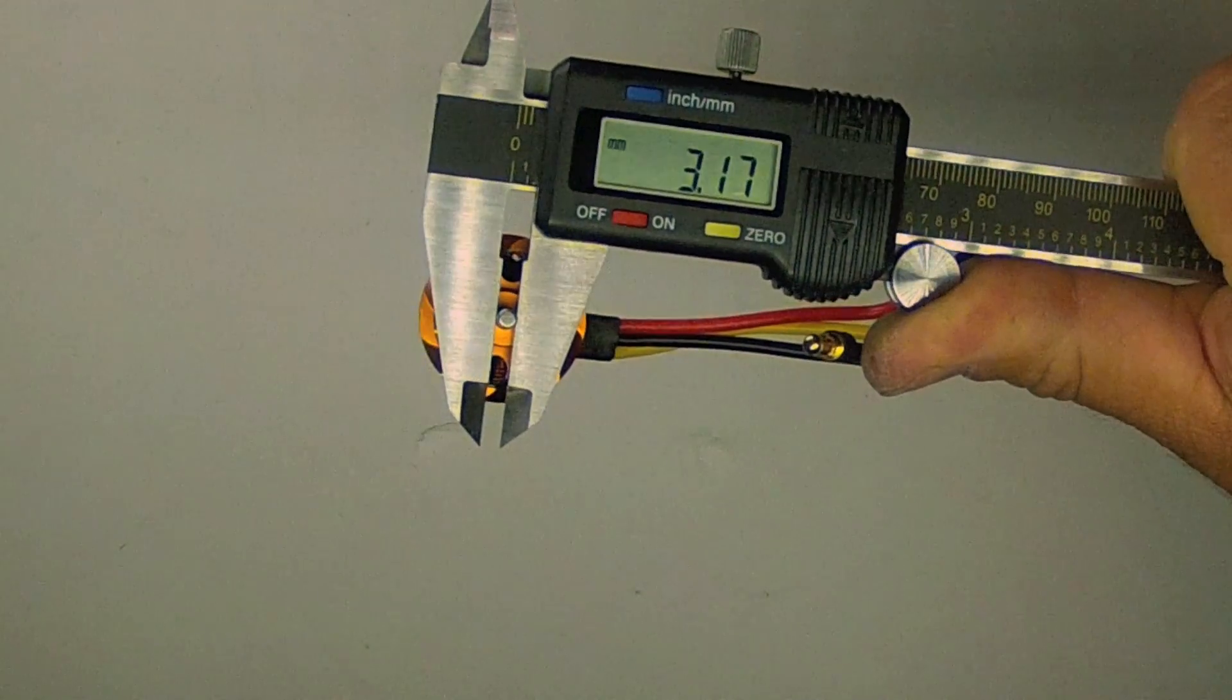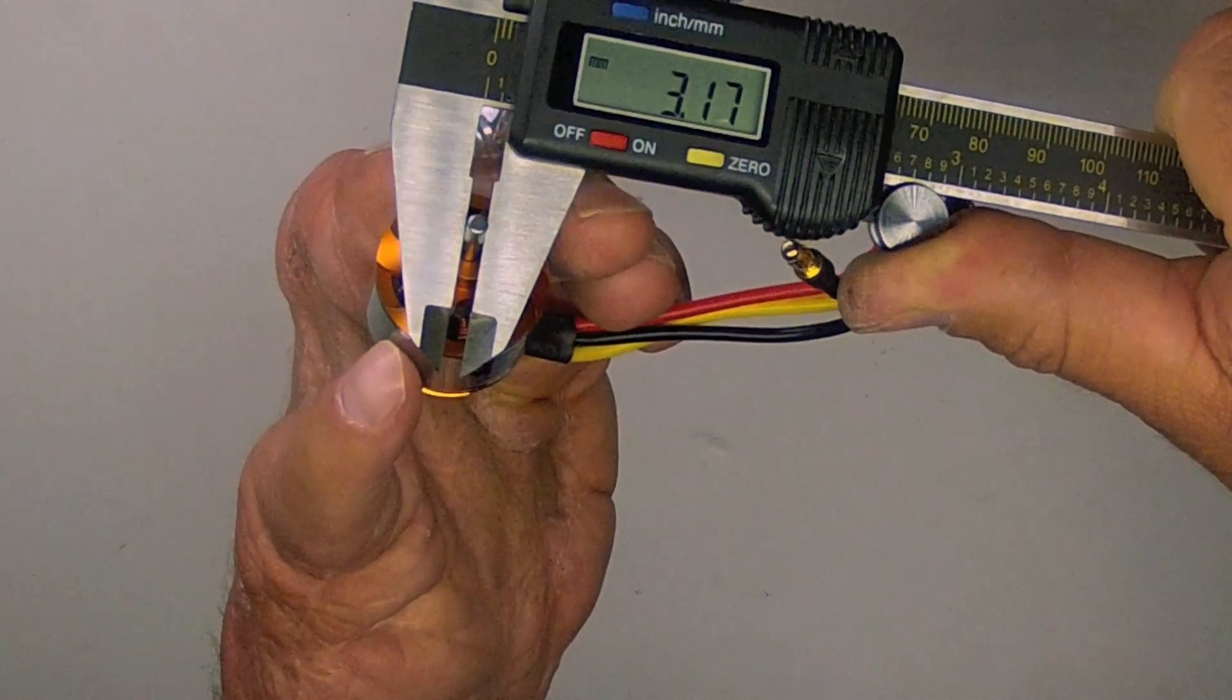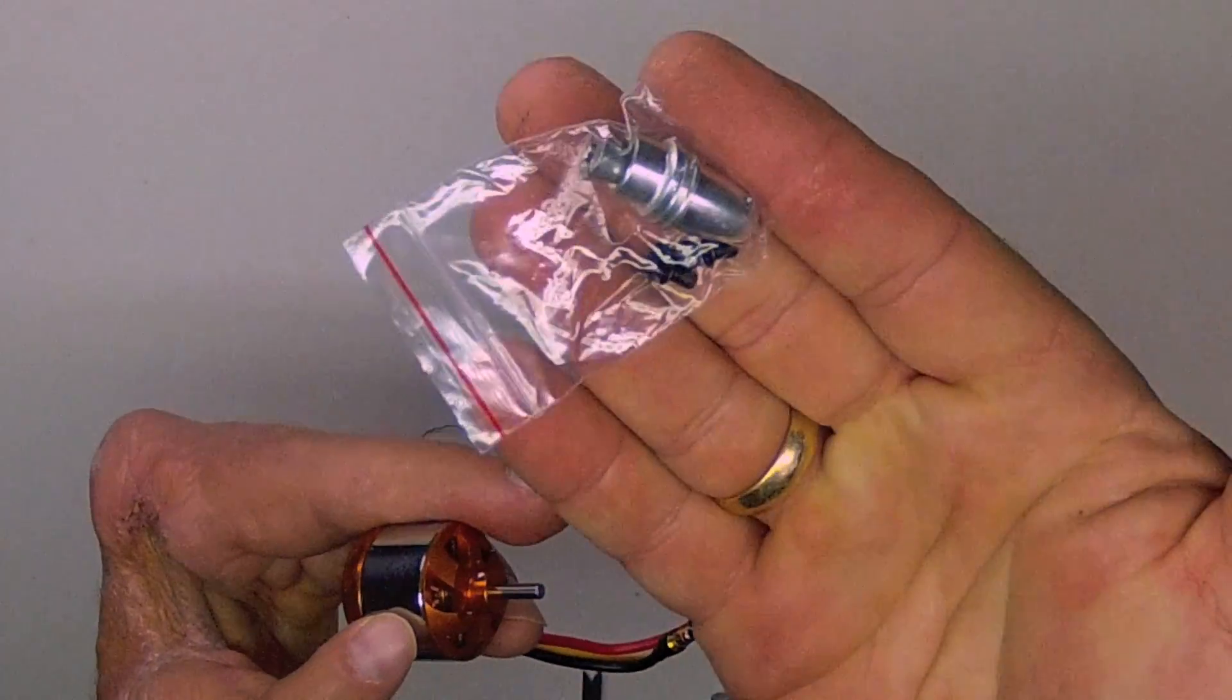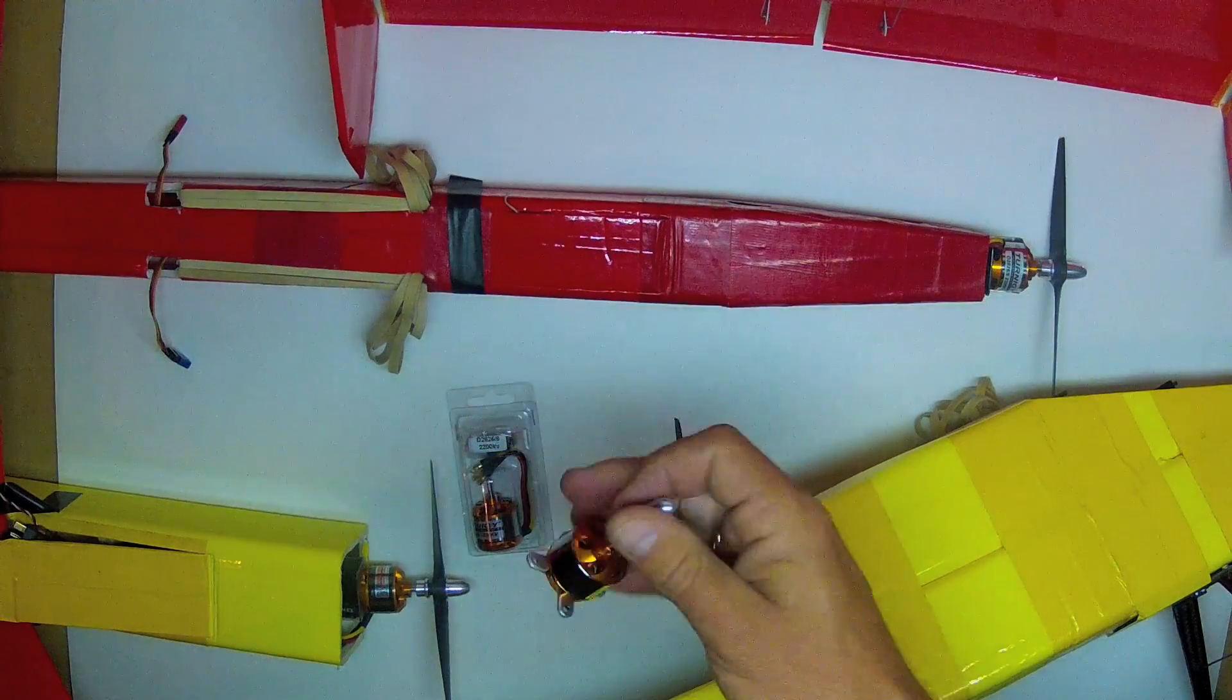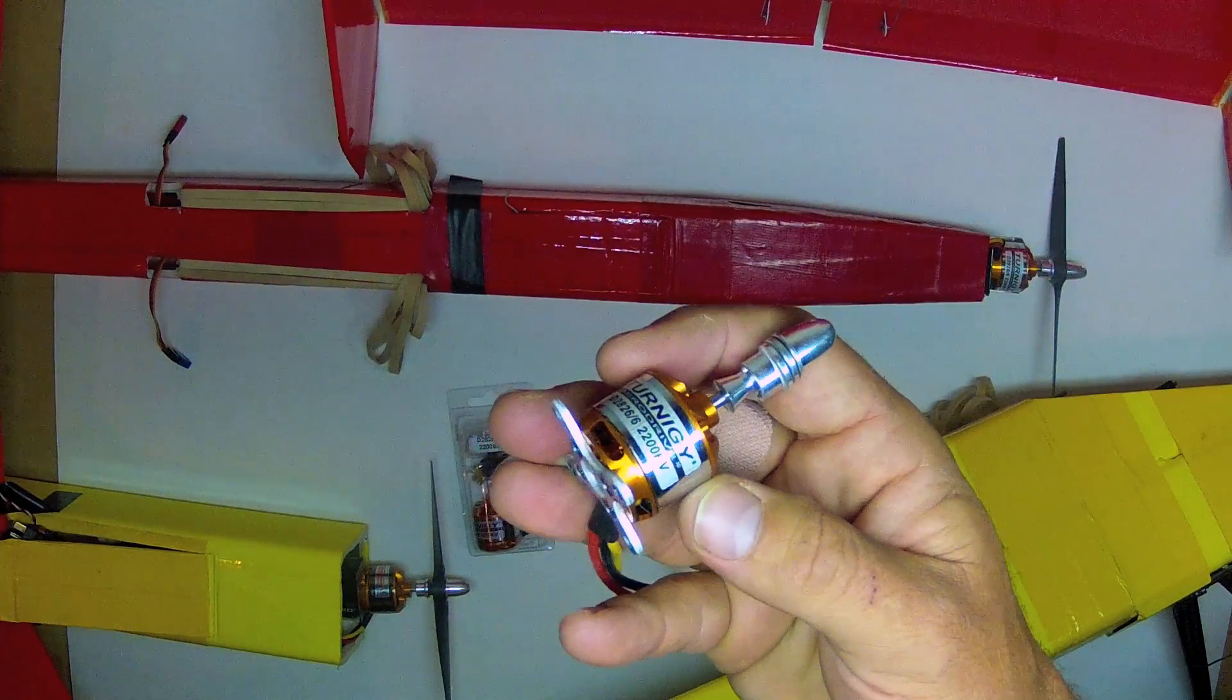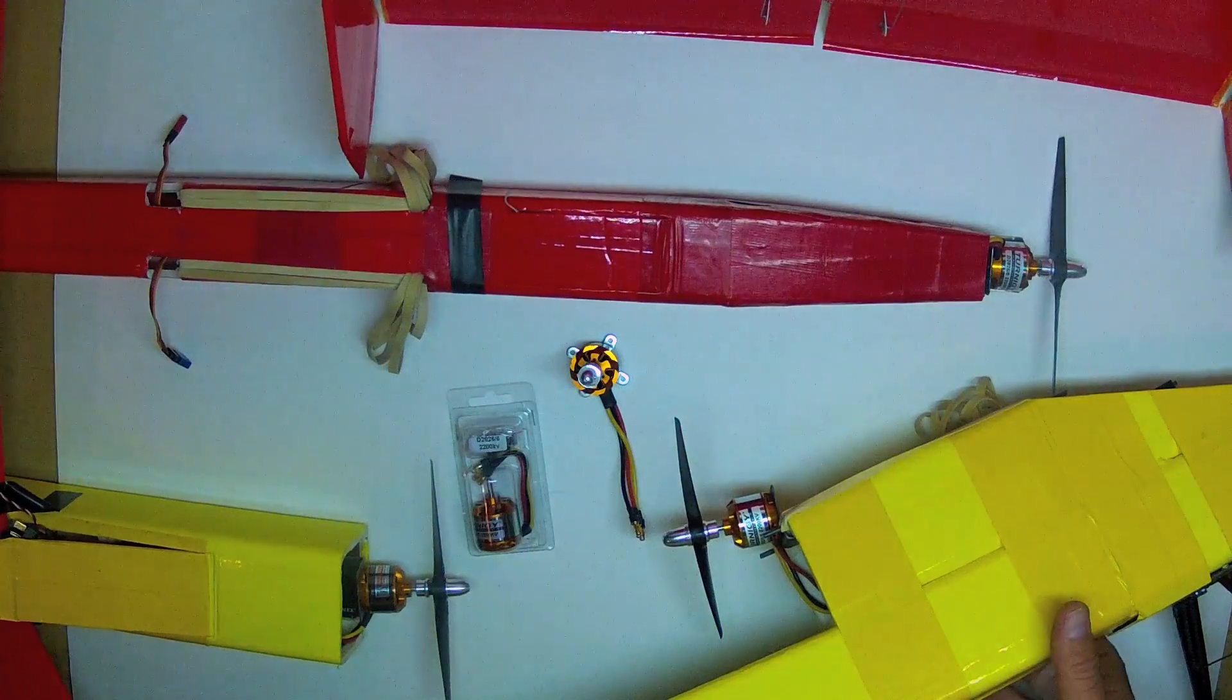It comes with a 3.17mm shaft. Be careful to note that it is not exactly 3mm, but 3.17mm. And it comes with the corresponding propeller adapter and mounting screws. These little motors are a compact power plant with a very high kV, which allows a small diameter propeller to be installed and still get a pretty good wattage output.